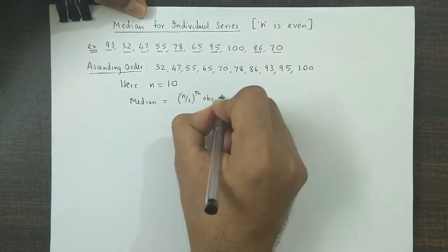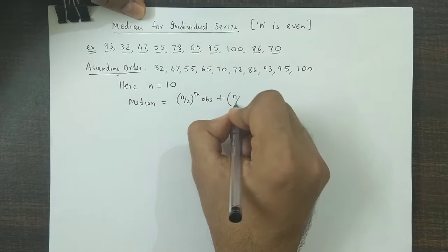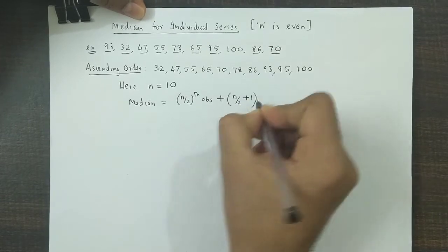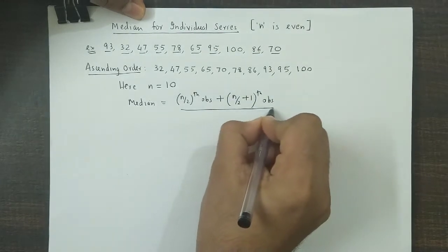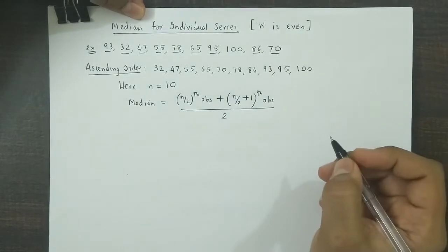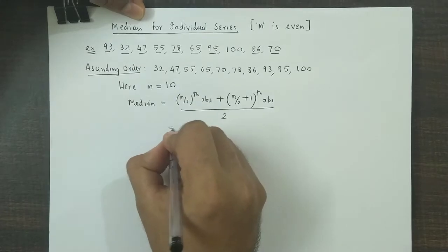and n by two plus one observation. So the average of these two—so we add and we divide by two. So we substitute n.